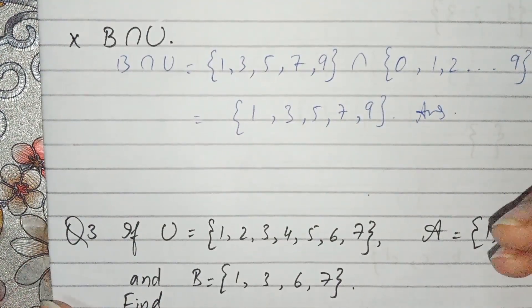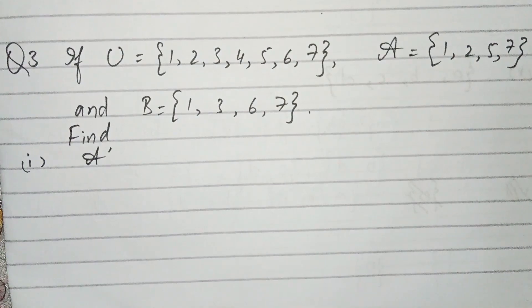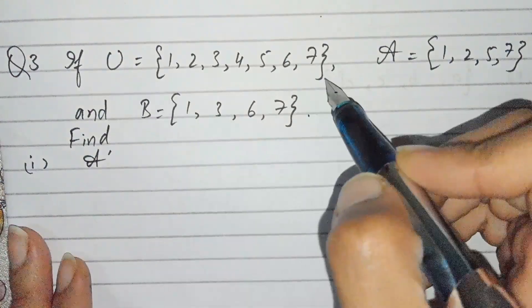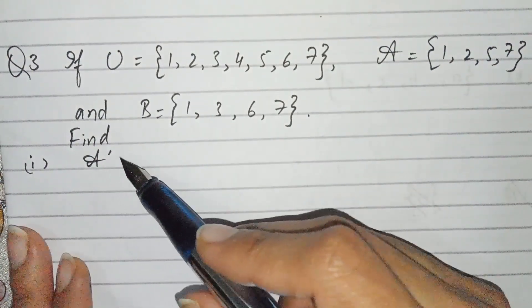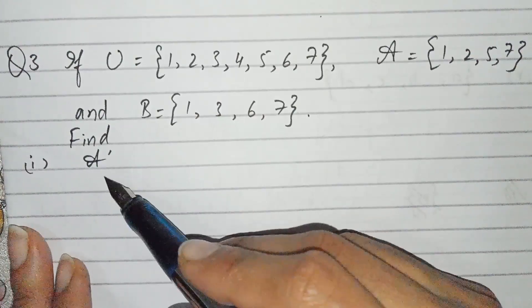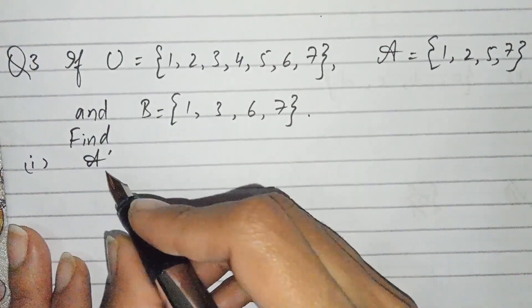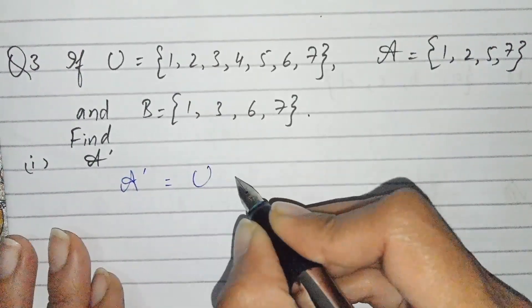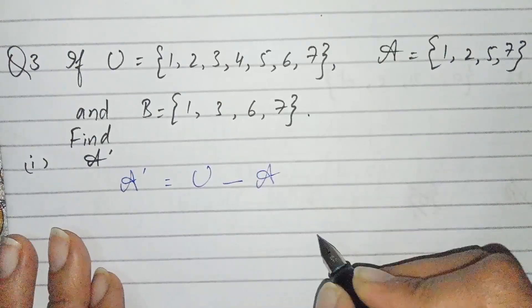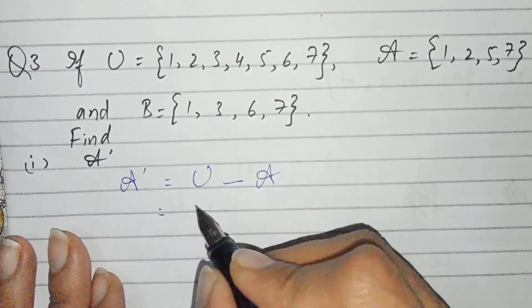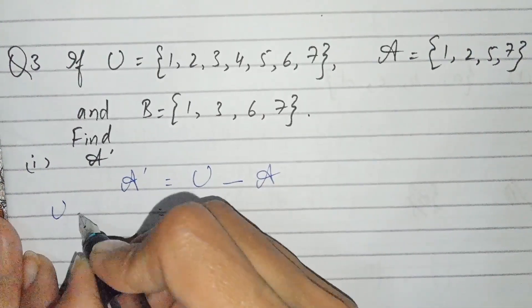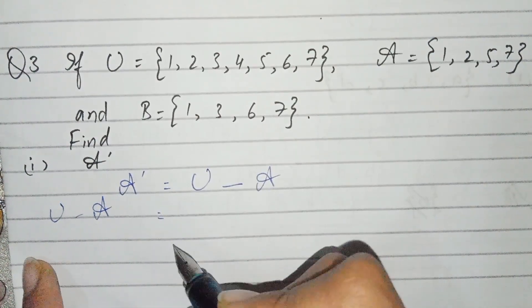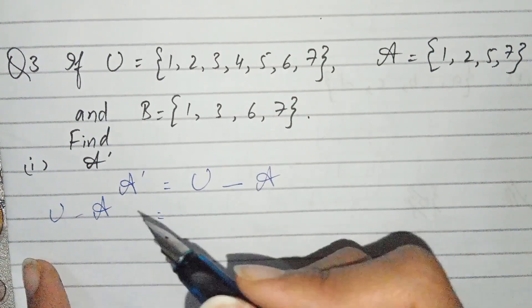Question number three: U and B are given; find A complement. A complement, or A prime, is equal to U minus A. We have to write those values which are present in U but not in A.